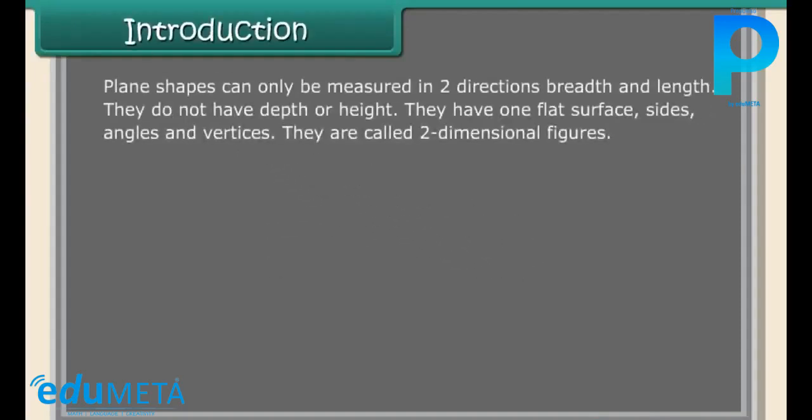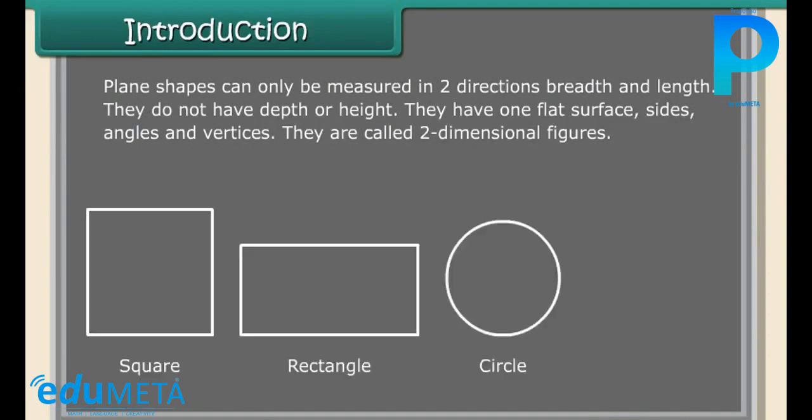Introduction. Plane shapes can only be measured in two directions: breadth and length. They do not have depth or height. They have one flat surface, sides, angles, and vertices. They are called two-dimensional figures, such as square, rectangle, circle, and triangle.